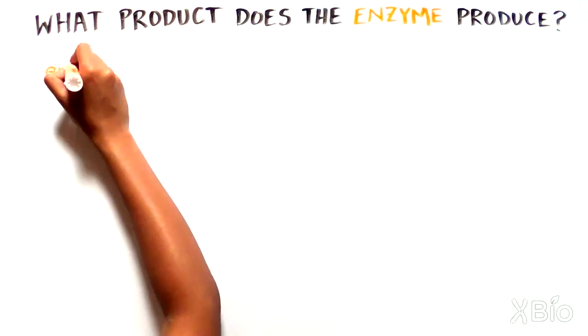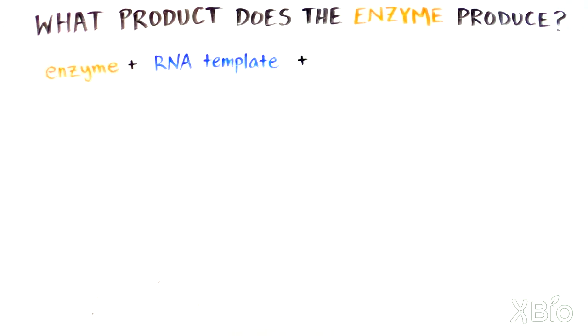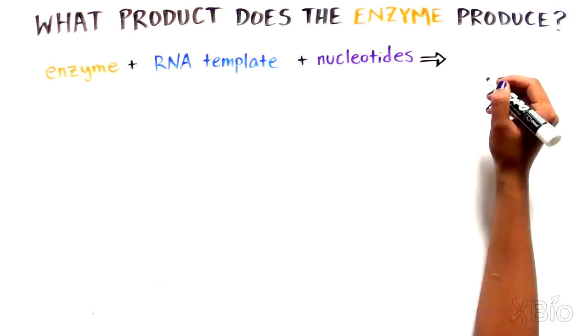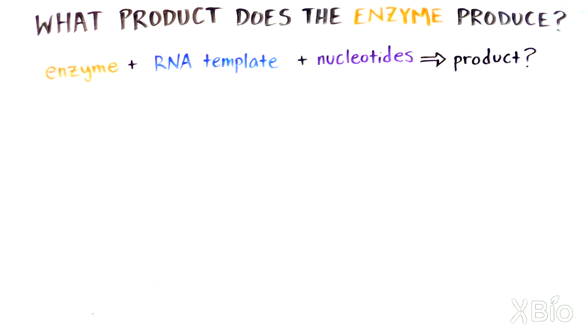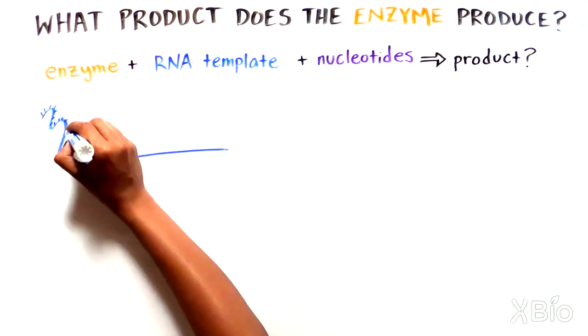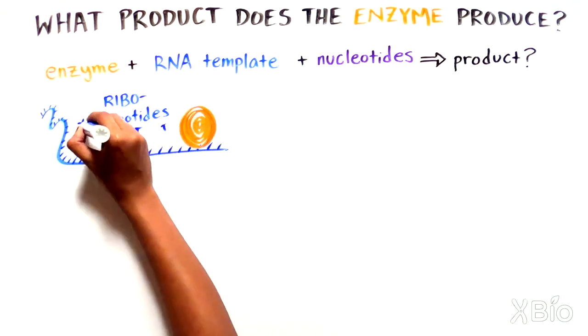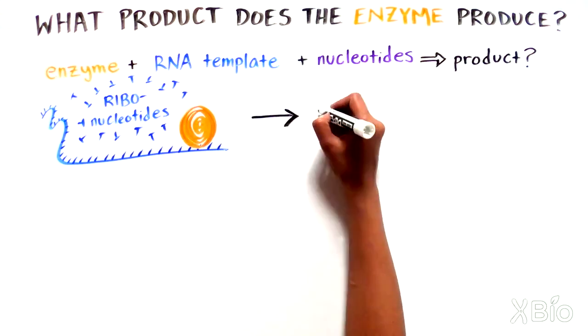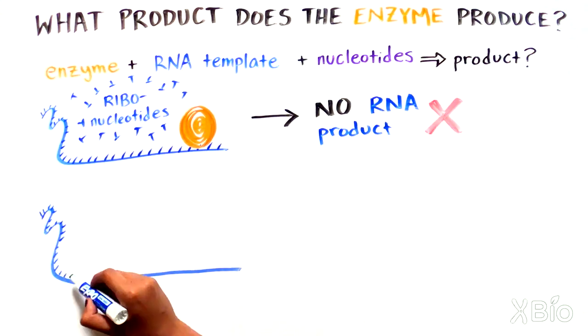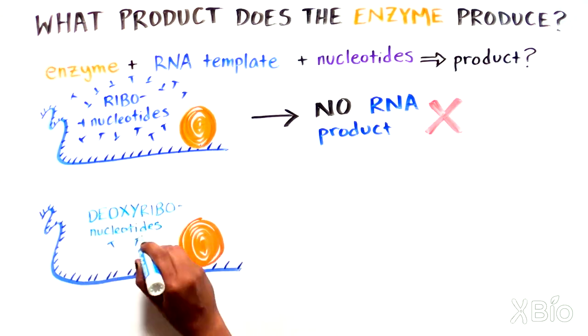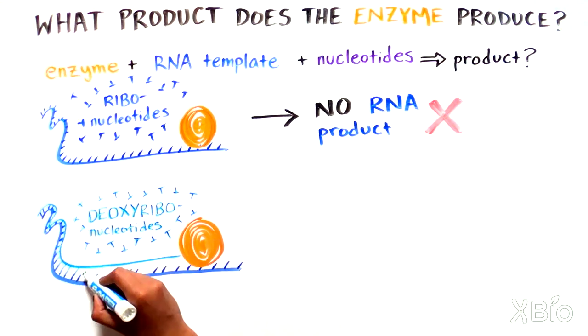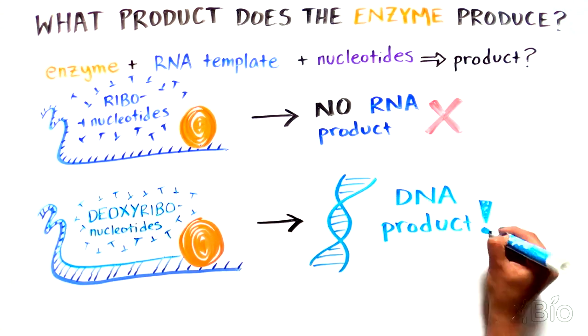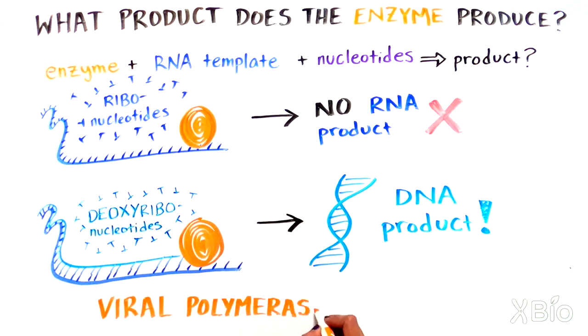They combined the purified enzyme with the RNA template and different kinds of nucleotides to be incorporated into the new product. If the nucleotides given were ribonucleotides, the building blocks of RNA, no product was produced. If instead they gave deoxyribonucleotides, the building blocks of DNA, they could get a product. This strongly suggested that the viral polymerase was converting the RNA template into a DNA product and not an RNA product.